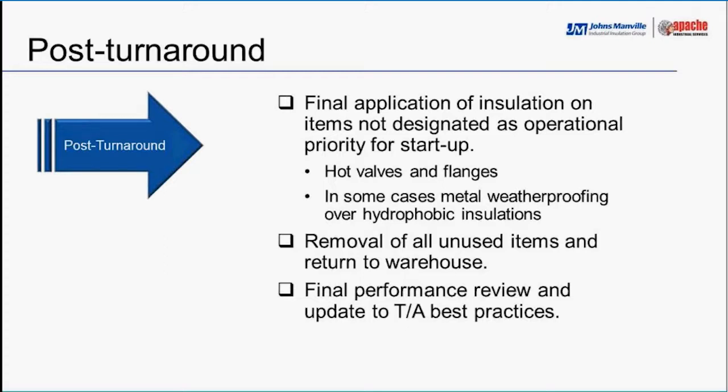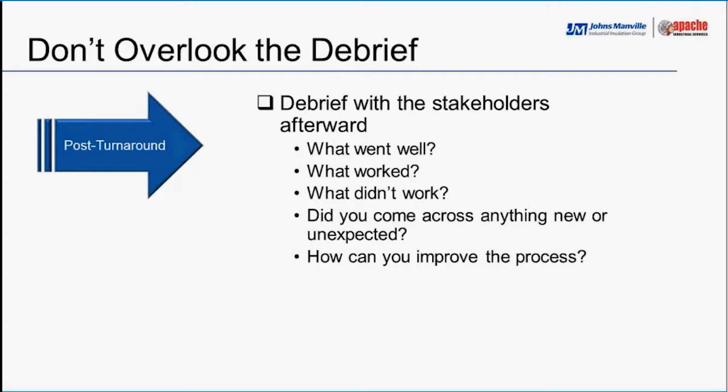Debrief: What went well? What worked? What didn't? Did you encounter anything new or unexpected? How can you improve the process? As a contractor, you want to know this — as does the manufacturer, distributor, and owner. If you cut two days off a turnaround, the money the owner saves by producing product quicker gets attention, and they'll put those improvements into the plan for next time.